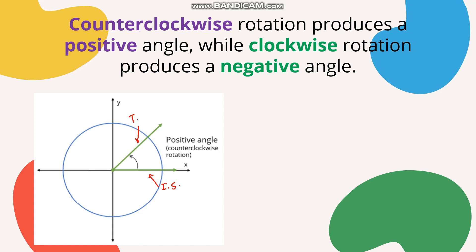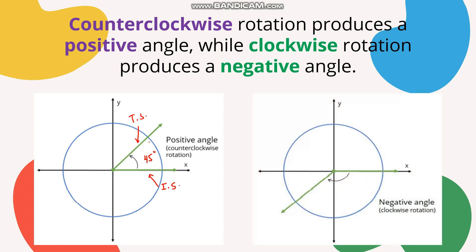Here is an illustration. This is our initial side and this is our terminal side. Since the terminal side moves in a counterclockwise rotation, this angle is positive — let's say positive 45 degrees. On the other hand, if the terminal side moves in a clockwise rotation, it produces a negative angle. For example, with the terminal side moving clockwise, this angle is negative — maybe negative 135 degrees.